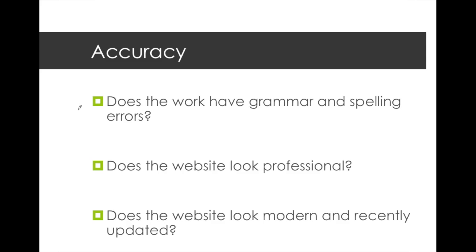The second A stands for accuracy. The easiest way to see if something you're looking at is good is to look for grammar and spelling errors. If you see any, chances are the source isn't a good authority. Information for your paper should come from an expert, like a scholar or professional.